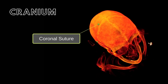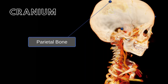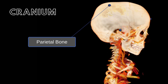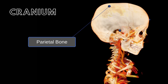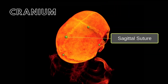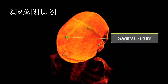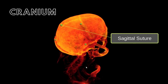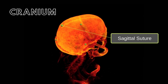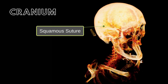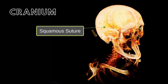The parietal bones are a left and right pair forming the side and top of the head. The sagittal suture joins the left and right parietal bones at the midline of the body. Laterally, the parietal bones are joined to the temporal bones by the squamo suture.